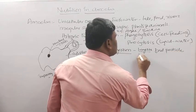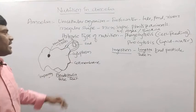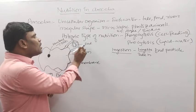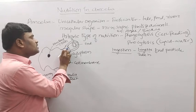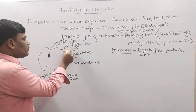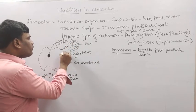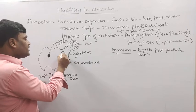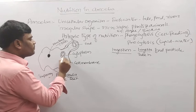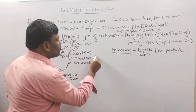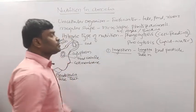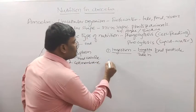Ingestion means taking in the food particle. Along with this food, some water is also present. As soon as it surrounds or encircles the food particle, the layer will disintegrate and slowly the food particle moves into the cytoplasm. This forms a food vacuole. This ingestion is the first step in the nutrition of amoeba.